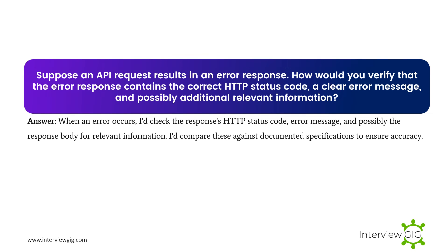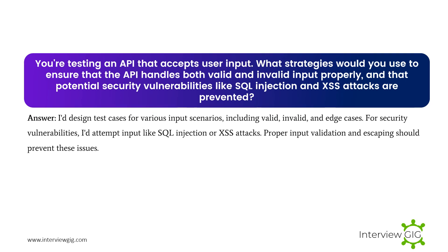Suppose an API request results in an error response. How would you verify that the error response contains the correct HTTP status code, a clear error message, and possibly additional relevant information? When an error occurs, I check the response's HTTP status code, error message, and the response body for relevant information, then compare these against documented specifications to ensure accuracy.